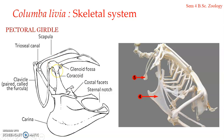The coracoid is a stout, straight rod-like bone directed downwards. It articulates with the coracoid groove on the sternum at the base of the manubrium. Its upper end on the inner side articulates with the scapula, and on its outer side it bears a deep cup-shaped depression forming the greater part of the glenoid cavity. The upper end is also produced into a hook-like acrocoracoid process which articulates with the clavicle.